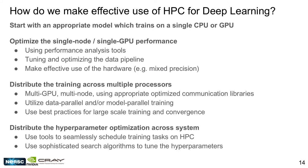Now we have deep learning methods, interesting science problems, and HPC systems — but how do we make effective use of HPC systems for deep learning? This slide details the roadmap structuring today's tutorial. We start assuming you already have a model that trains on a single CPU or GPU. Before throwing hundreds or thousands of GPUs at a problem, it's important to first optimize how effectively you're using a single computational unit — a single node or GPU.